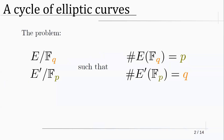I'll start by introducing the core problem, which is a pure mathematical problem: we're looking for two elliptic curves E and E', where one is defined over F_p and the other over F_q. The interesting thing is that the size of the base field of one curve determines the number of points on the other — if one curve is over F_q, it has p points, and the other over F_p has q points.